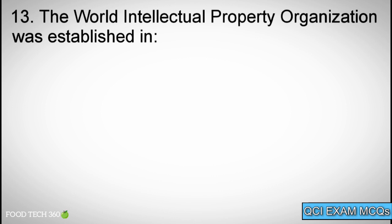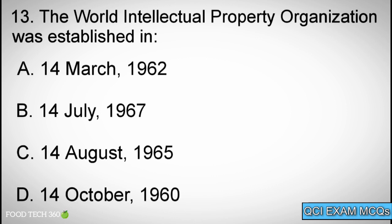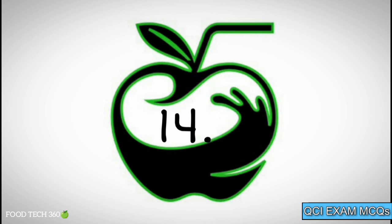Question number 13: The World Intellectual Property Organization was established in? Options: A. 14th of March 1962, B. 14th of July 1967, C. 14th of August 1965, D. 14th of October 1960. Correct answer: B. 14th of July 1967.